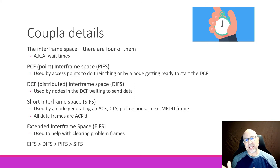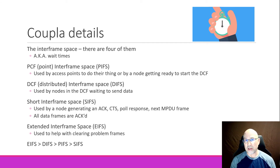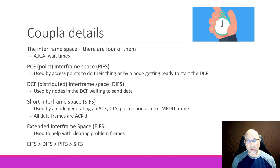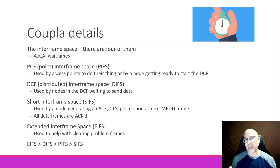The last one is the Extended Inter-Frame Space, or EIFS. It's the longest of the inter-frame spaces, and it's used to help clear out problem frames. For example, if we have a frame with a bad CRC and we want to get it off the network — we don't want anybody to answer it — so we wait for the Extended Inter-Frame Space and then throw it out. The thing to remember is that the EIFS is the biggest, then we have the DIFS, the PIFS, and then the SIFS. They're all used for different purposes, and it's critical that we obey the rules and keep track of timing within the cell.